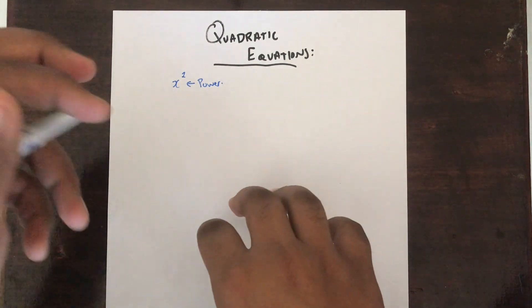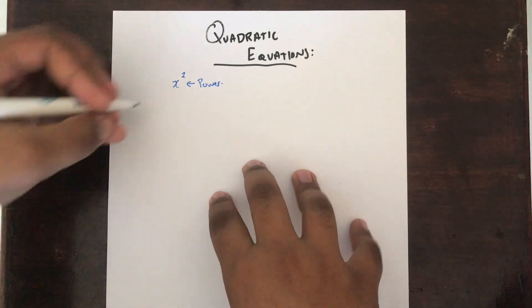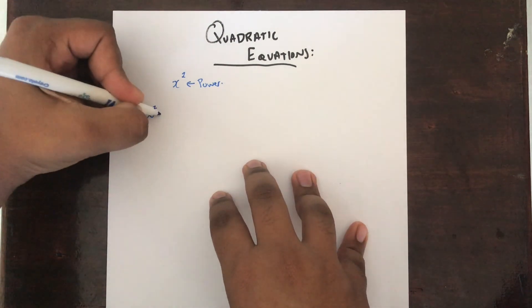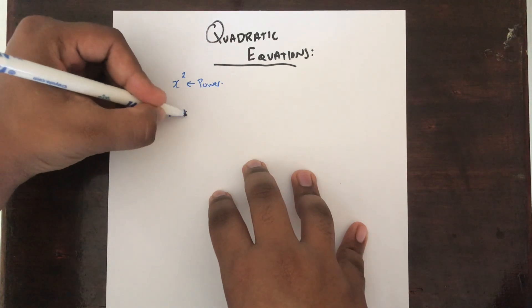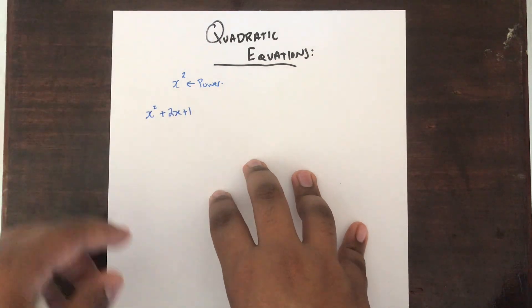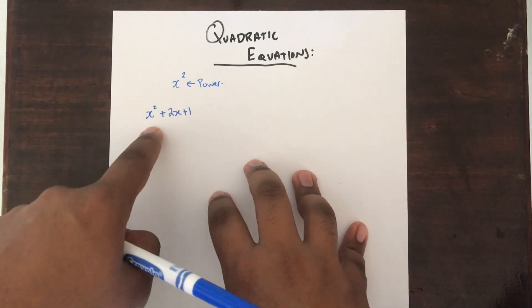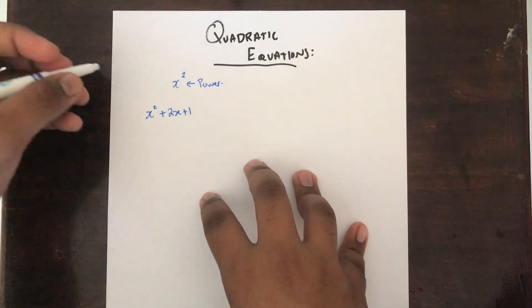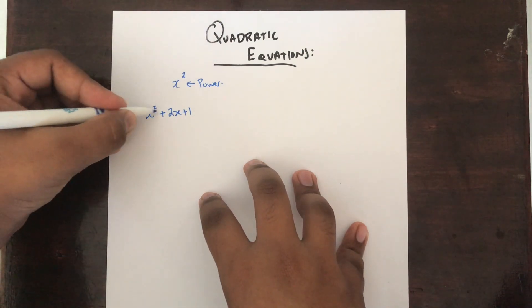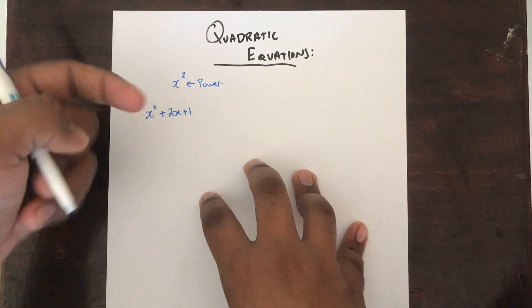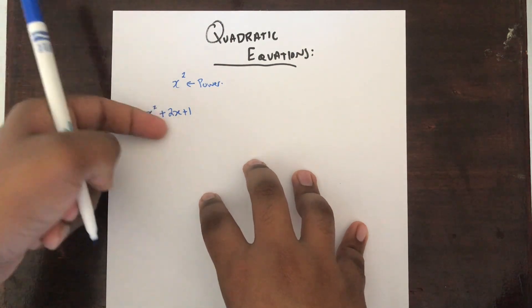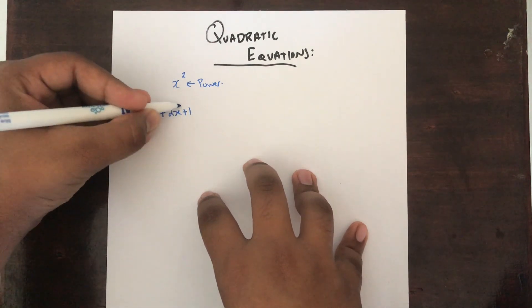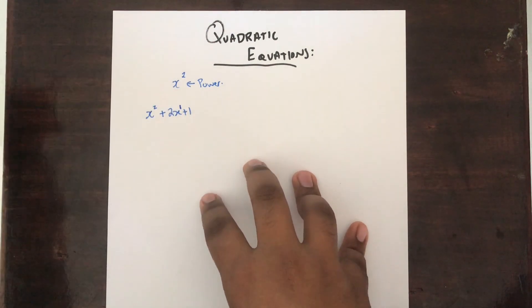Now let me give you an example of a quadratic equation: x squared plus 2x plus 1. A quadratic equation must have the highest power of x as power 2, which is the case here. Then you can have power 1 or even power 0.